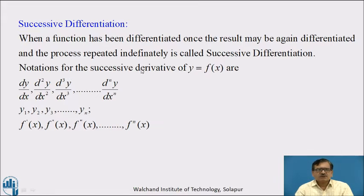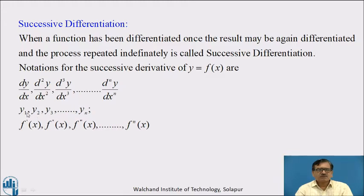The notation for the successive derivatives of y = f(x) are: we denote the first derivative by dy/dx, the second derivative by d²y/dx², the third derivative by d³y/dx³, and so on. The nth derivative is denoted d^n y/dx^n. For convenience, we can also use the symbols y₁ for dy/dx, y₂ for d²y/dx², y₃ for d³y/dx³, and so on, with yₙ for the nth derivative.